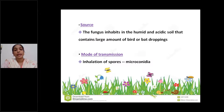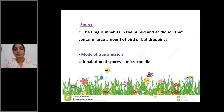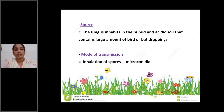The source of infection: the fungus inhabits humid and acidic soils that contain large amounts of bird — especially pigeon — droppings. Humid soil contaminated with spores of Histoplasma capsulatum excreted by birds and bats, especially pigeons, is the source of infection. The mode of transmission is through inhalation, and the infective form is the microconidia.